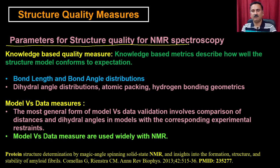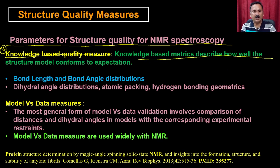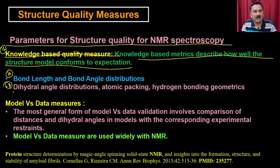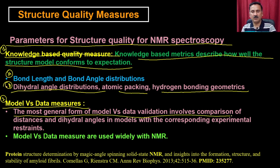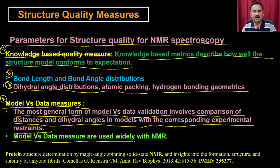Now the parameters for structure quality for NMR spectroscopy: the first parameter is called the knowledge-based quality measures. Knowledge-based matrices describe how well the structure model conforms to expectations, which means you are going to see the bond length and the bond angle. Remember the Ramachandran plot — that is very important to satisfy the structure solved by NMR spectroscopy. You can also have the dihedral angle distributions, atomic packing, and hydrogen bonding matrices. The second parameter is the model versus data measurements — what model you have prepared and what the data is suggesting. The most general form of model versus data validation involves the comparison of the distances and dihedral angles in the model with the corresponding experimental restraints. The model versus data measurements are used widely with NMR to assess the structure quality.